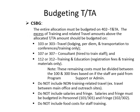For CSBG, the entire allocation must be budgeted on line 402, which is the TNTA line. The excess of training and related travel amounts above the allocated TNTA amount should be budgeted on the following lines. For travel, which includes lodging, per diem, and transportation to conferences or trainings only, that excess should be budgeted on lines 103 or 303 accordingly. For consultant costs hired to train staff, those should be budgeted on 107 or 307 if the cost is too much to be accommodated by the TNTA budget. Likewise, training and education, which includes registration fees and training materials only, that excess should be budgeted to lines 112 or 312.